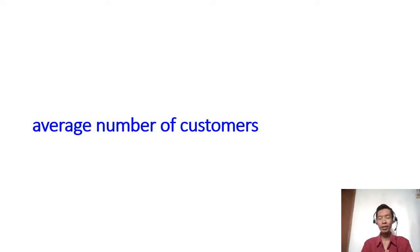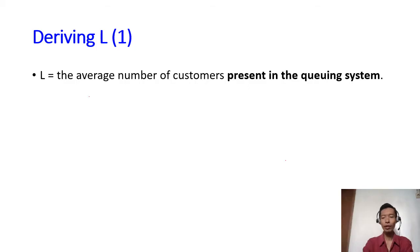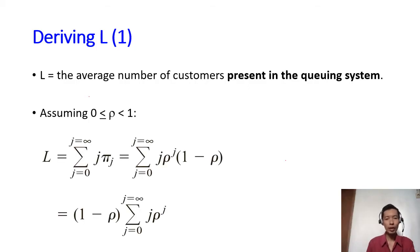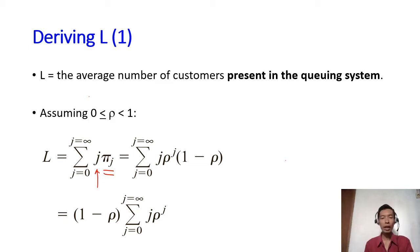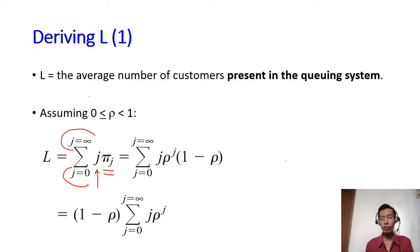We'll start by deriving L, which is the average number of customers present in the system. To find the average number of people, we multiply J people in the system times the probability that we see J people in the system — so J times pi_J. So 0 times pi_0, 1 times pi_1, 2 times pi_2, and so on. It's the same thing when we want to find the expected value of a random variable. Because the system can have from 0 people up to infinity, we take the summation from 0 to infinity.